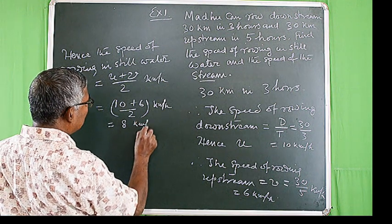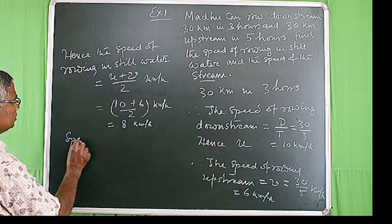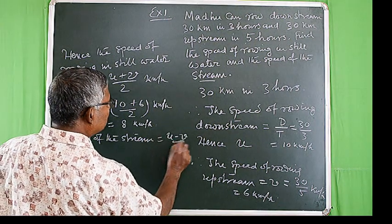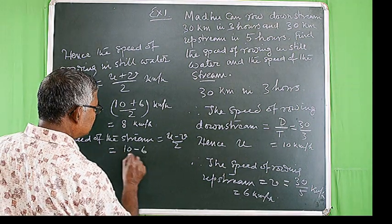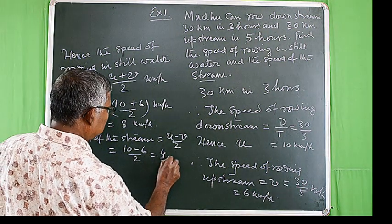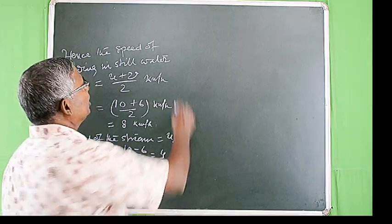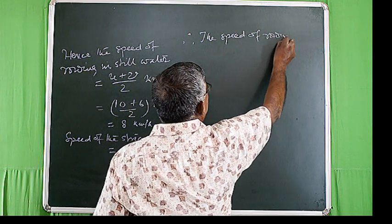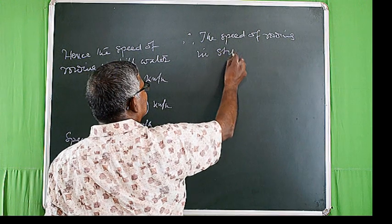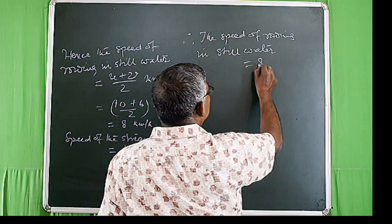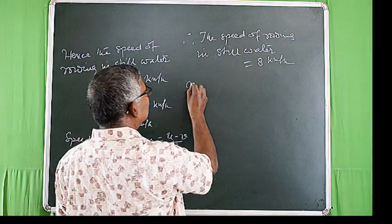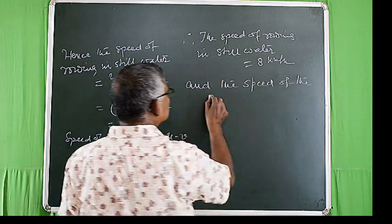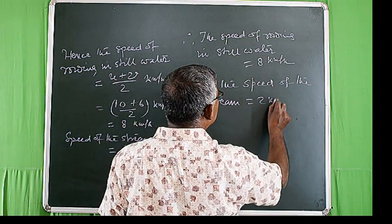Hence the speed of rowing in still water = (u + v) / 2 = (10 + 6) / 2 = 8 km per hour. And speed of the stream = (u - v) / 2 = (10 - 6) / 2 = 4 / 2 = 2 km per hour. Therefore speed of rowing in still water = 8 km/h and speed of the stream = 2 km/h.